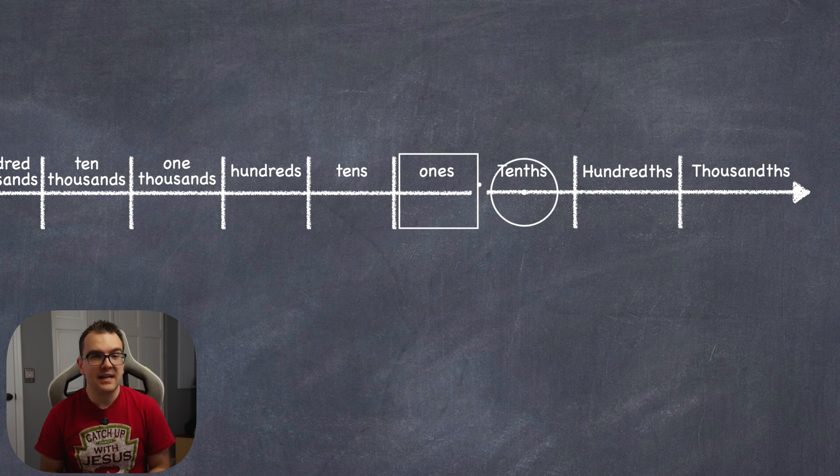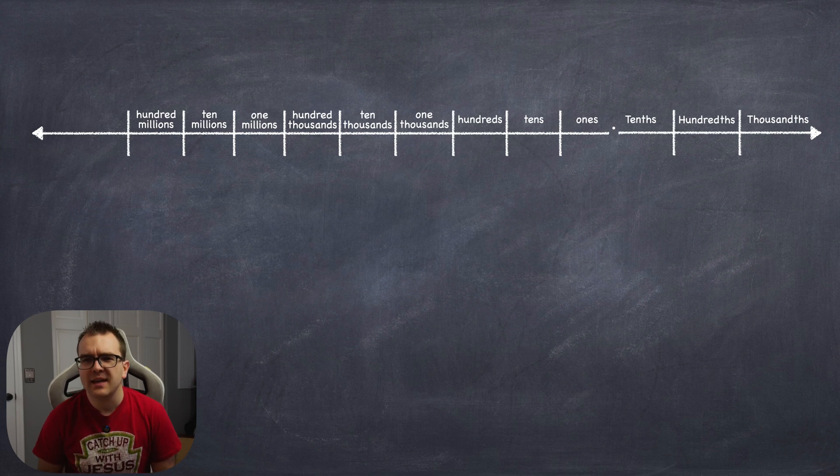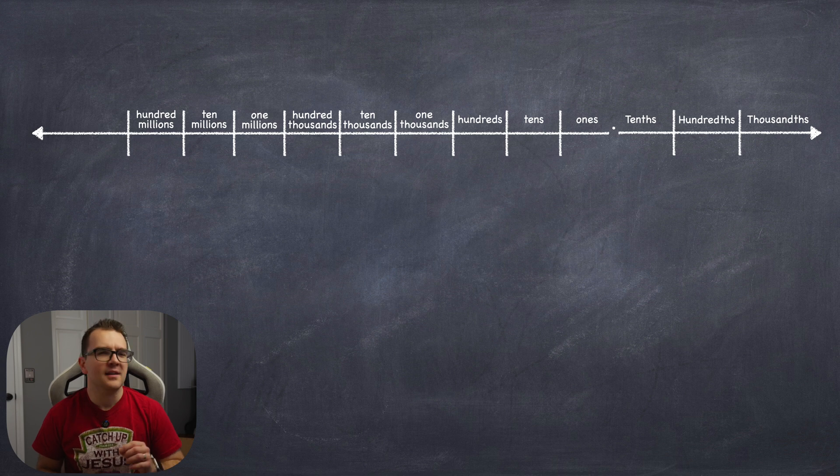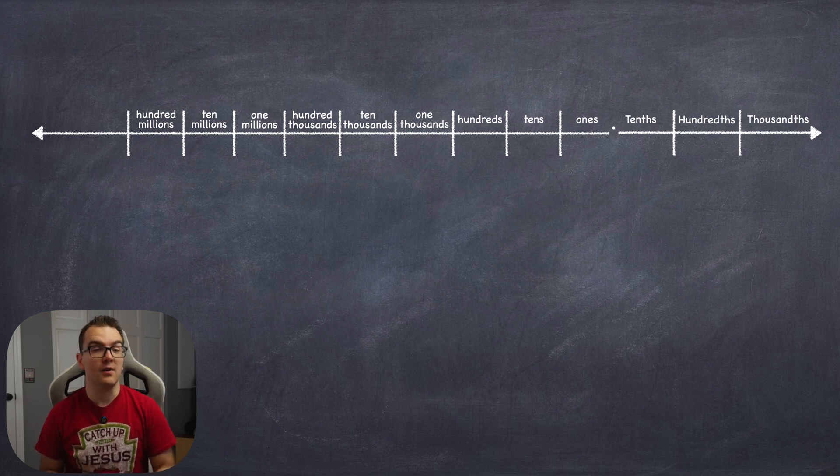So after the decimal, each place is a fractional part of one. If we tried to say one-th for the first place after the decimal, it would imply one whole, not a fraction of one. But decimals aren't made of whole parts. They're made of tenths, hundredths, and so on.